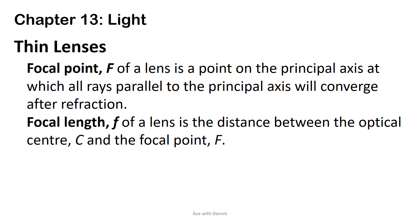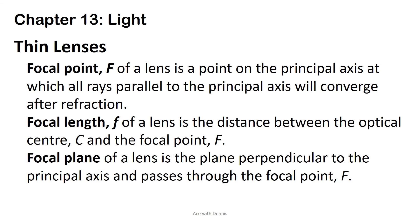Focal length, F, of a lens is the distance between the optical center, C, and the focal point, F. The focal plane of a lens is the plane perpendicular to the principal axis and passes through the focal point, F.